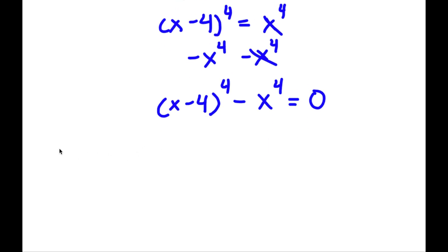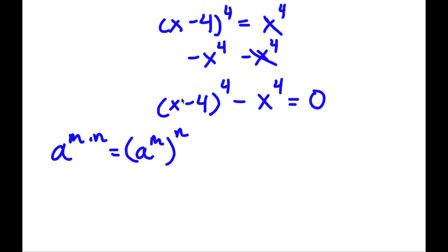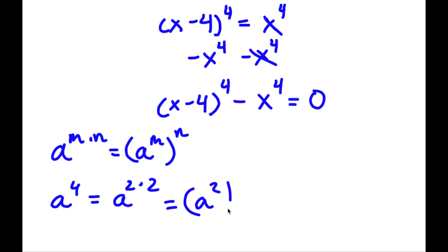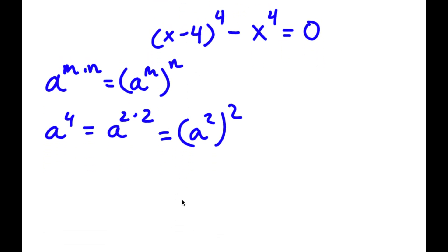Now if I have something in the form a to the power of m times n, this is equal to a to the power of m, to the power of n. So in this case we can think of x minus 4 as 'a' and 4 as m times n — that is 2 times 2. So (x minus 4)⁴ can be rewritten as (x minus 4)² to the power of 2.